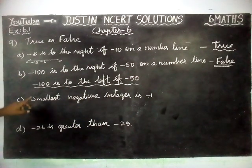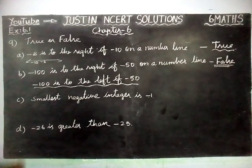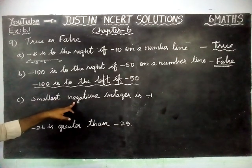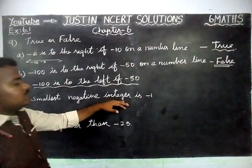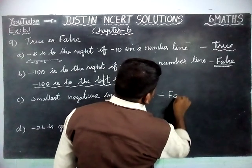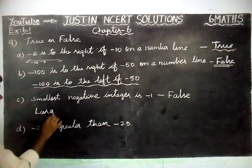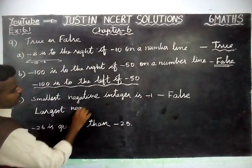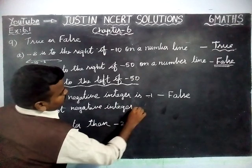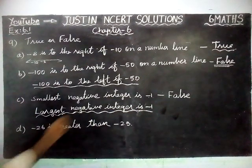Part C: smallest negative integer is minus 1. This is false. Minus 1 is actually the greatest negative number on the number line, not the smallest. The correct statement is: largest negative integer is minus 1.